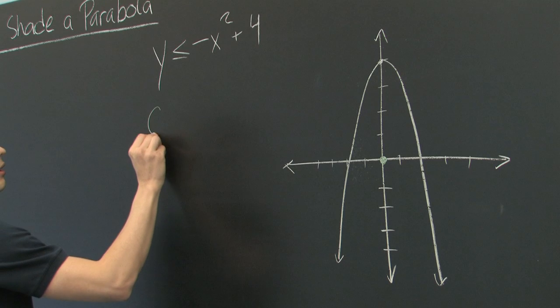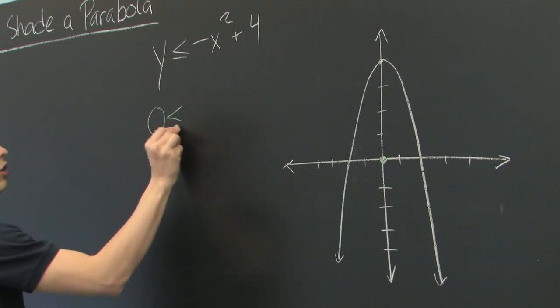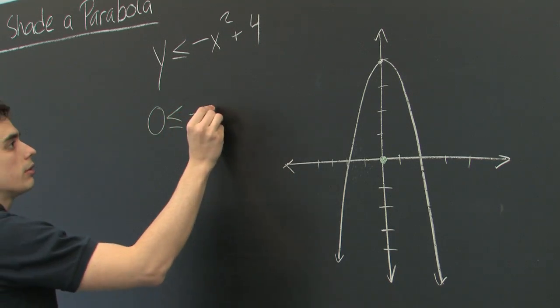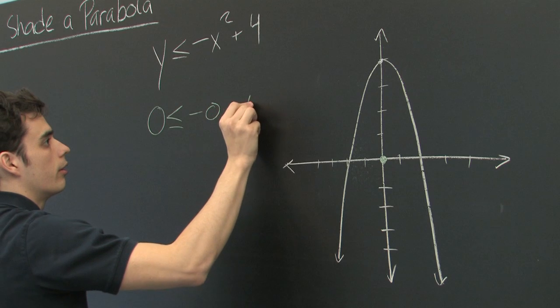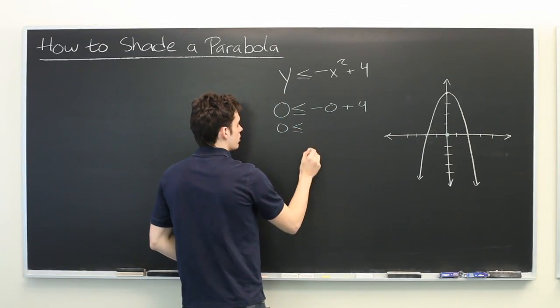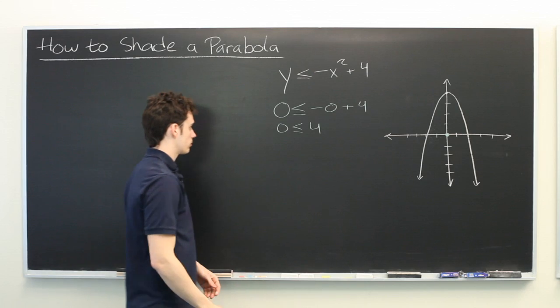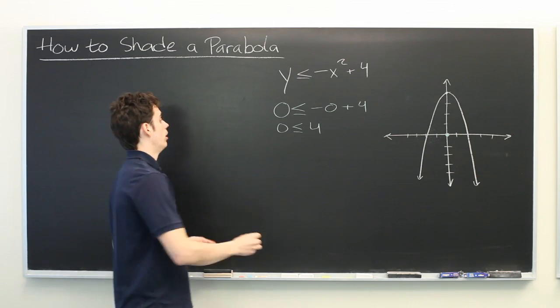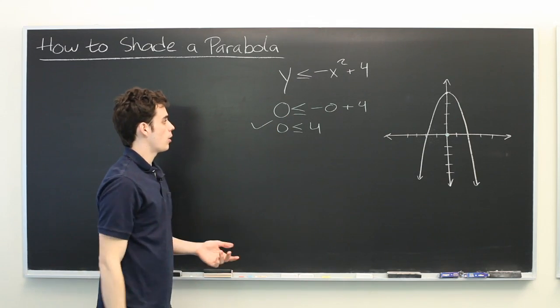So let's see here. 0 is less than or equal to negative 0 plus 4, or in other words, 0 is less than or equal to 4. Well, that's true. So we know we're in the right region.